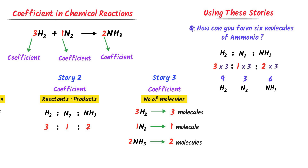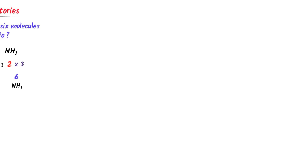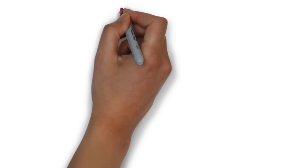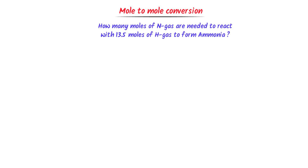To conclude, any coefficient in a reaction shows either the number of moles, or ratio, or number of molecules. Now let me teach you the different conversions of stoichiometry, like mole-to-mole conversion. Consider this problem: how many moles of nitrogen gas are needed to react with 13.5 moles of hydrogen to form NH₃?